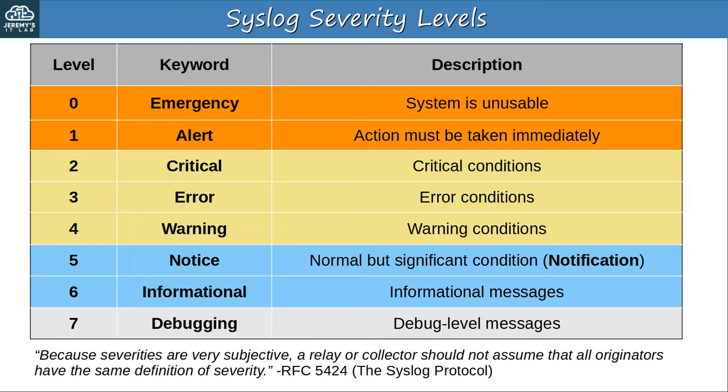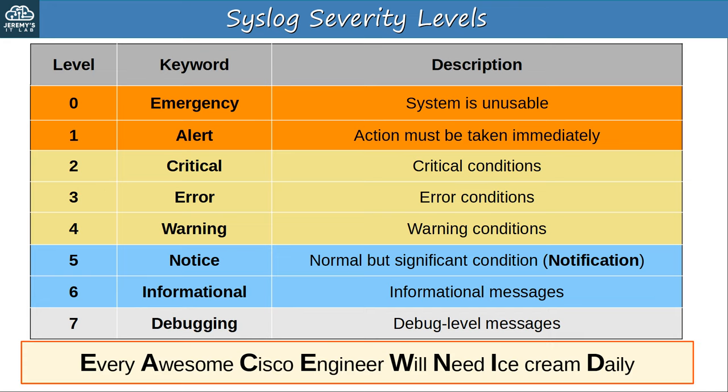For the CCNA exam, make sure you have memorized the levels and keywords — you should know that level 1 is alert and informational is level 6, for example. If you want some help remembering them, here's a mnemonic: 'Every awesome Cisco engineer will need ice cream daily.' Just like the OSI model — if you know any other good ways to remember these levels, post them in the comments section.